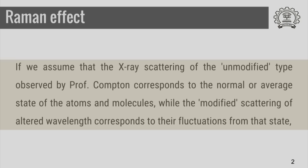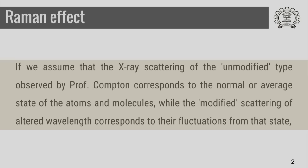The paper is titled something like 'A New Radiation.' When Raman starts the paper, he does not start by announcing that we have discovered a new radiation. Instead, he starts like this: 'If we assume that the X-ray scattering of the unmodified type observed by Professor Compton corresponds to the normal or average state of the atoms and molecules, while the modified scattering of altered wavelength corresponds to their fluctuations from that state, it would follow that we should expect also in the case of ordinary light two types of scattering — one determined by the normal optical properties of the atoms or molecules and another representing the effect of their fluctuations from their normal state.'